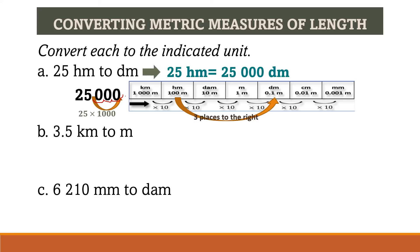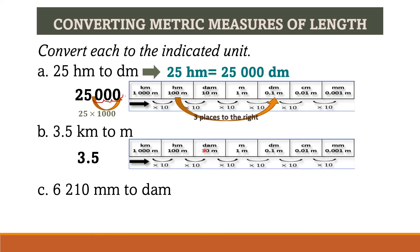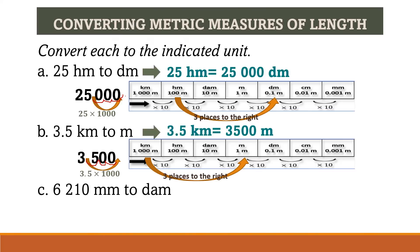For example B, we convert 3.5 kilometers to meters. The decimal point is already given. We find kilometer and meter in the diagram — the distance between them is 1, 2, 3: three places to the right. Our decimal point moves three places to the right, and we annex two zeros for the empty place values. Our answer is 3,500 meters, so 3.5 kilometers equals 3,500 meters.